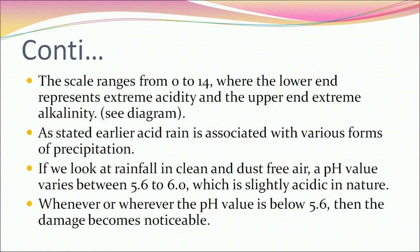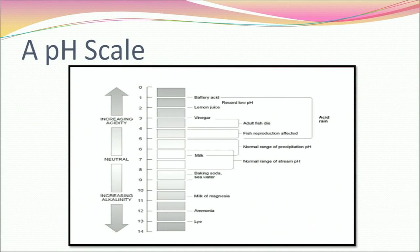Acidity is measured on a pH scale based on the relative concentration of hydrogen ions, ranging from 0 to 14, where the lower end represents extreme acidity and the upper end extreme alkalinity. In clean, dust-free air, rainfall has a pH value between 5.6 to 6, which is slightly acidic. Whenever the pH value falls below 5.6, damage becomes noticeable.